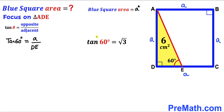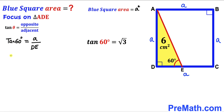We know that tangent of 60 degrees is √3, so we replace the left-hand side with √3. Therefore √3 equals lowercase a divided by DE length.